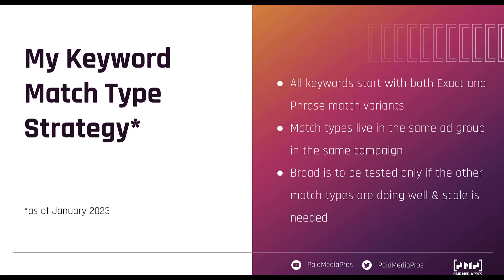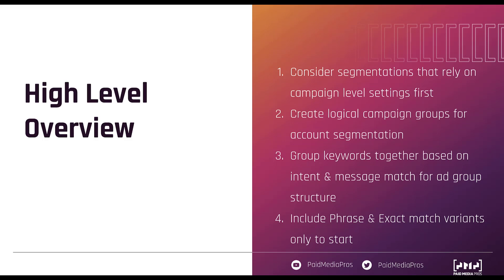That's pretty much it for my campaign structure strategy. As a quick overview: first, consider all segmentations that rely on campaign-level settings — budget, geography, conversion goals, reporting. Then create logical campaign groups for account segmentation, whether based on department, brand, customer, service line, or user authority — whatever makes the most sense for you and your management style. Next, group keywords into those campaign segments and match them at the ad group level based on user intent and keyword language. If there's no difference in intent and you won't use different ad copy, leave them in the same ad group. Finally, always start with phrase and exact match variants and expand to broad only after seeing good performance.